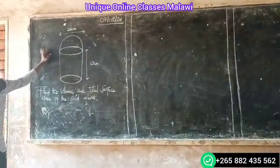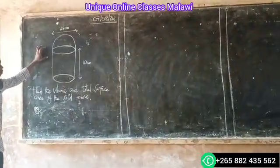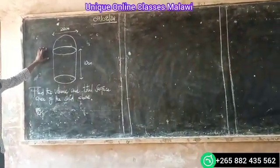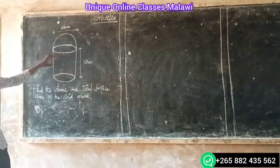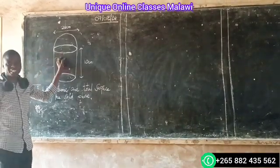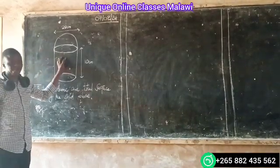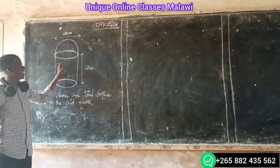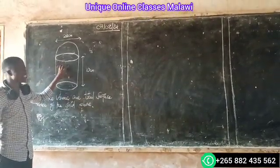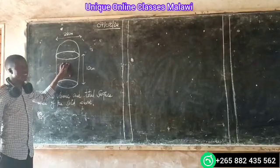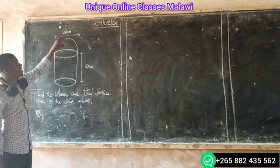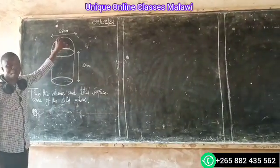We are given this figure, where we have this cylinder, and on top of this cylinder there is a hemisphere.